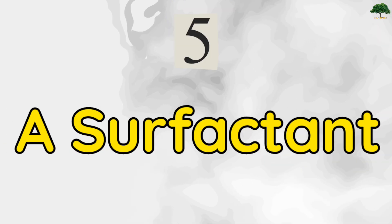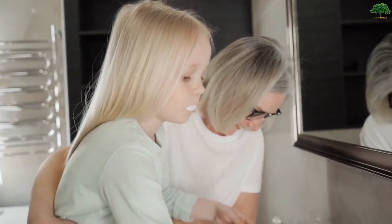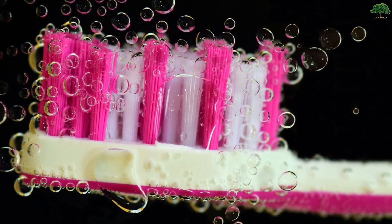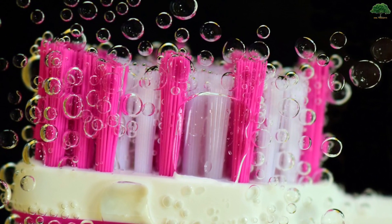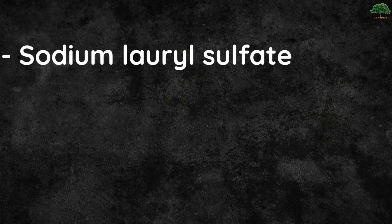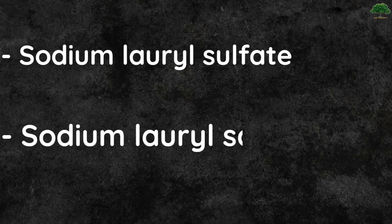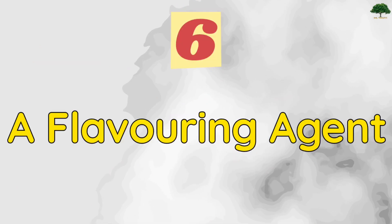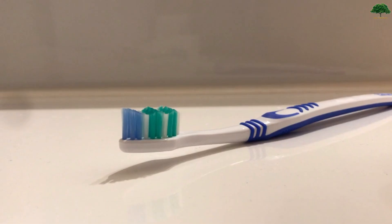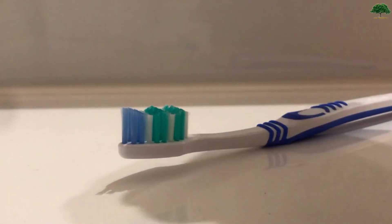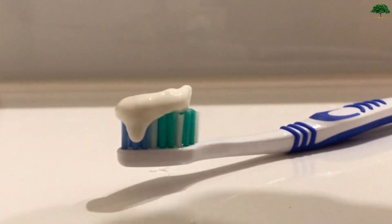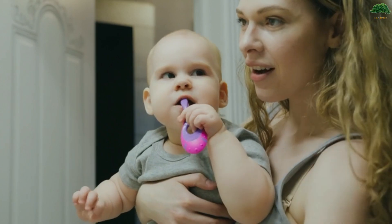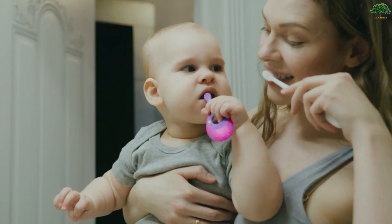Number 5: Surfactant. This helps toothpaste foam when you brush. Common surfactants used include sodium lauryl sulfate and sodium lauryl sarcosinate. Number 6: Flavoring agent. Flavoring is added to toothpaste to give it a pleasant taste and smell.